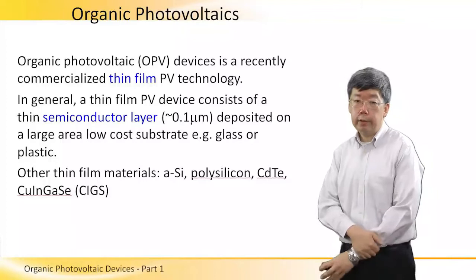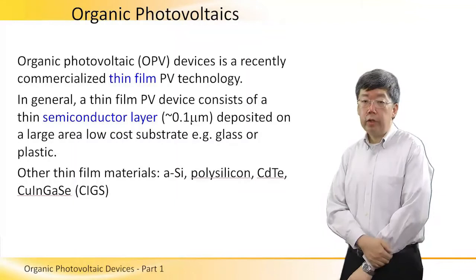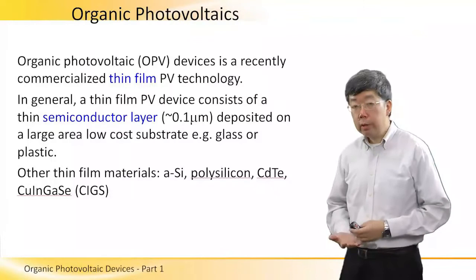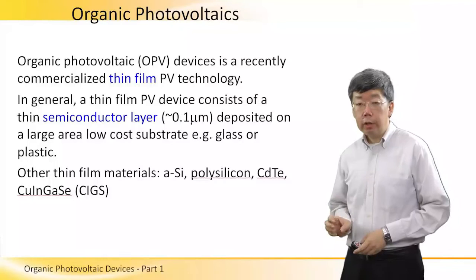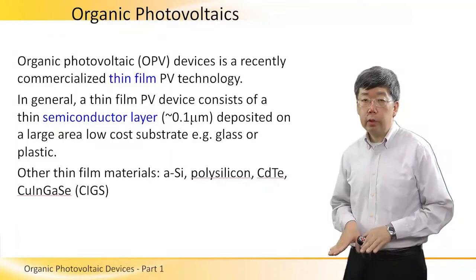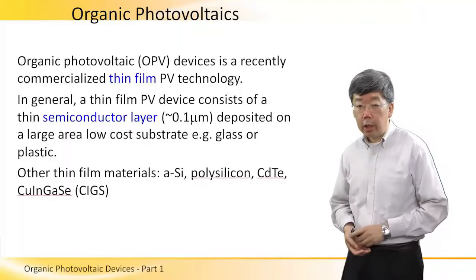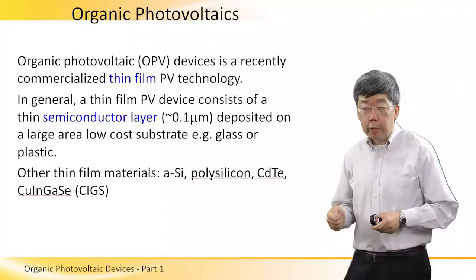So what are thin-film PV devices? In general, a thin-film PV device will consist of a thin semiconductor layer. This is typically about 0.1 micron thick, and one micrometer is one millionth of a meter. This thin semiconductor layer is deposited on a large area, low-cost substrate such as glass or plastic. If it is deposited on plastic, then the device could be bent or flexible.